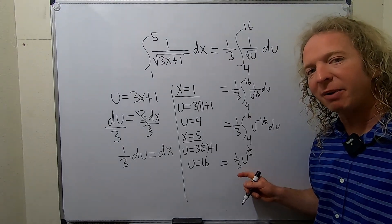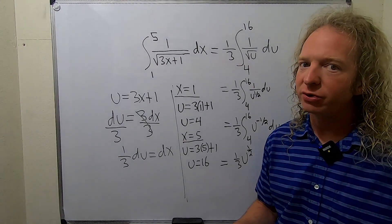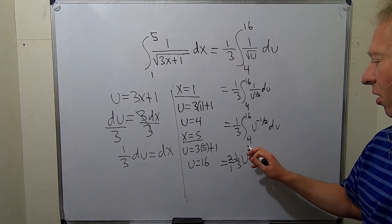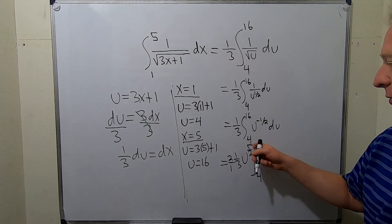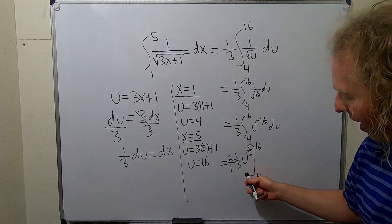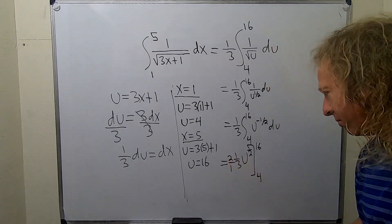When you divide by 1 half you really multiply by the reciprocal, so 2 over 1. And then we're going from 4 to 16. Again, we add 1 to the negative 1 half, so we get 1 half. We divide by 1 half, but when you divide by 1 half you really multiply by the reciprocal.